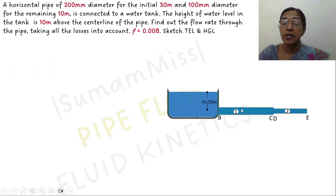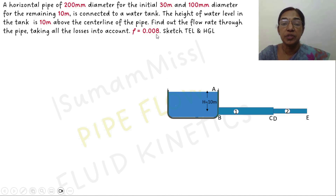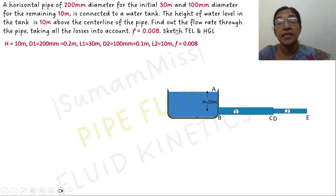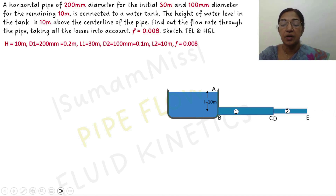In this section we discuss the method of sketching the total energy line and hydraulic gradient line by solving this problem. The figure shows a tank connected by two pipes in series. The height of water above the centerline is 10 meters. The diameter of the first pipe is 200 mm with a length of 30 meters. The diameter of the second pipe is 100 mm with a length of 10 meters. It freely discharges to atmosphere. The coefficient of friction is 0.008. The losses in this problem are: entrance loss, friction loss in pipe 1, contraction loss, friction loss in pipe 2, and exit loss. The algebraic sum of all these losses equals 10 meters.